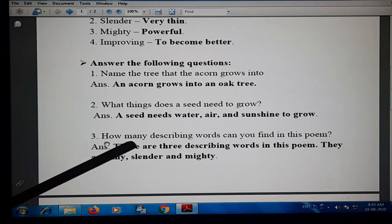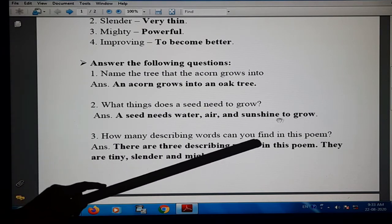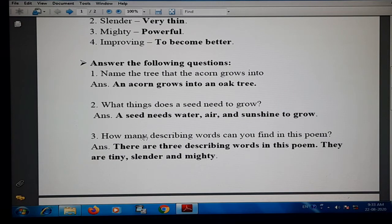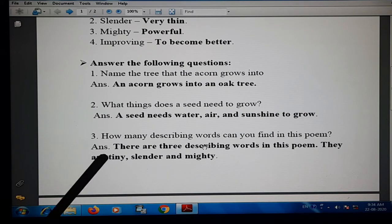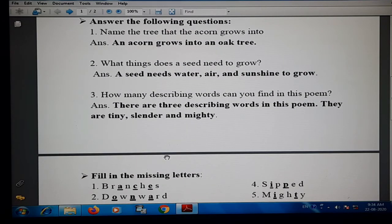Question three is how many describing words can you find in this poem? How many describing words are visible in the poem? There are three describing words in this poem. They are tiny, slender and mighty. These are the describing words.